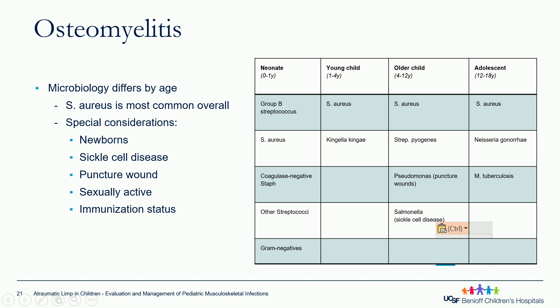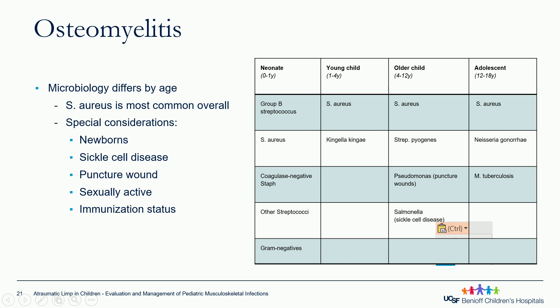Similar to septic arthritis, osteomyelitis microbiology differs by age. Staph aureus is the most common overall. Special considerations include newborns — Group B Strep and Staph aureus, and gram-negatives. For younger children one to four years old: Staph aureus and Kingella kingae. For older children: Staph aureus remains most common. Neisseria gonorrhoeae for adolescents. Salmonella for sickle cell disease patients. Atypical organisms for immunocompromised patients. Also consider history of puncture wound, penetrating trauma, sexually active patients, and immunization status.